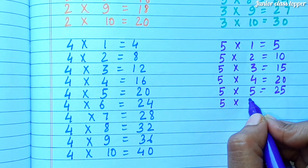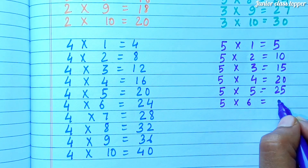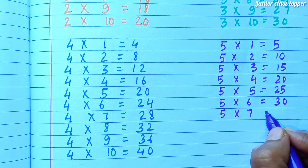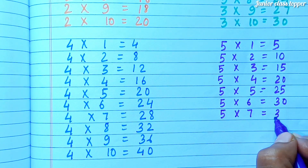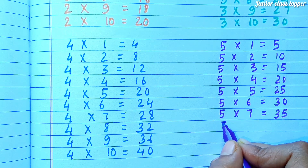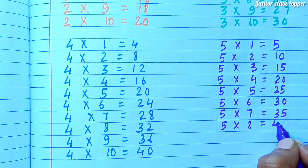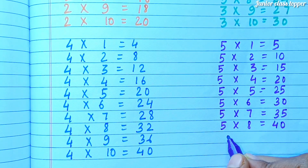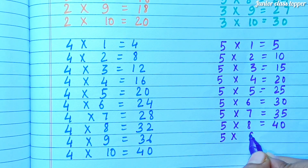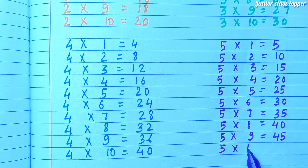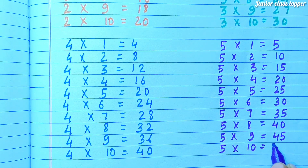5 6s are 30. 5 7s are 35. 5 8s are 40. 5 9s are 45. 5 10s are 50.